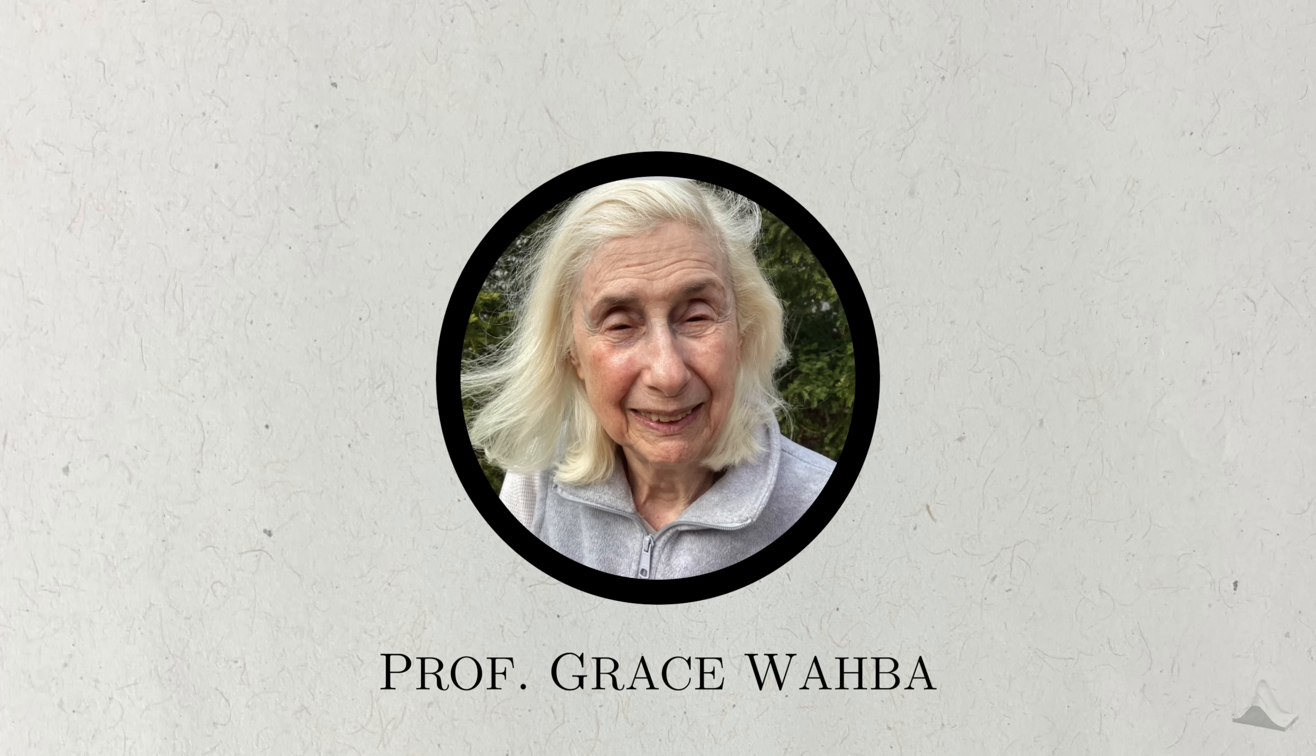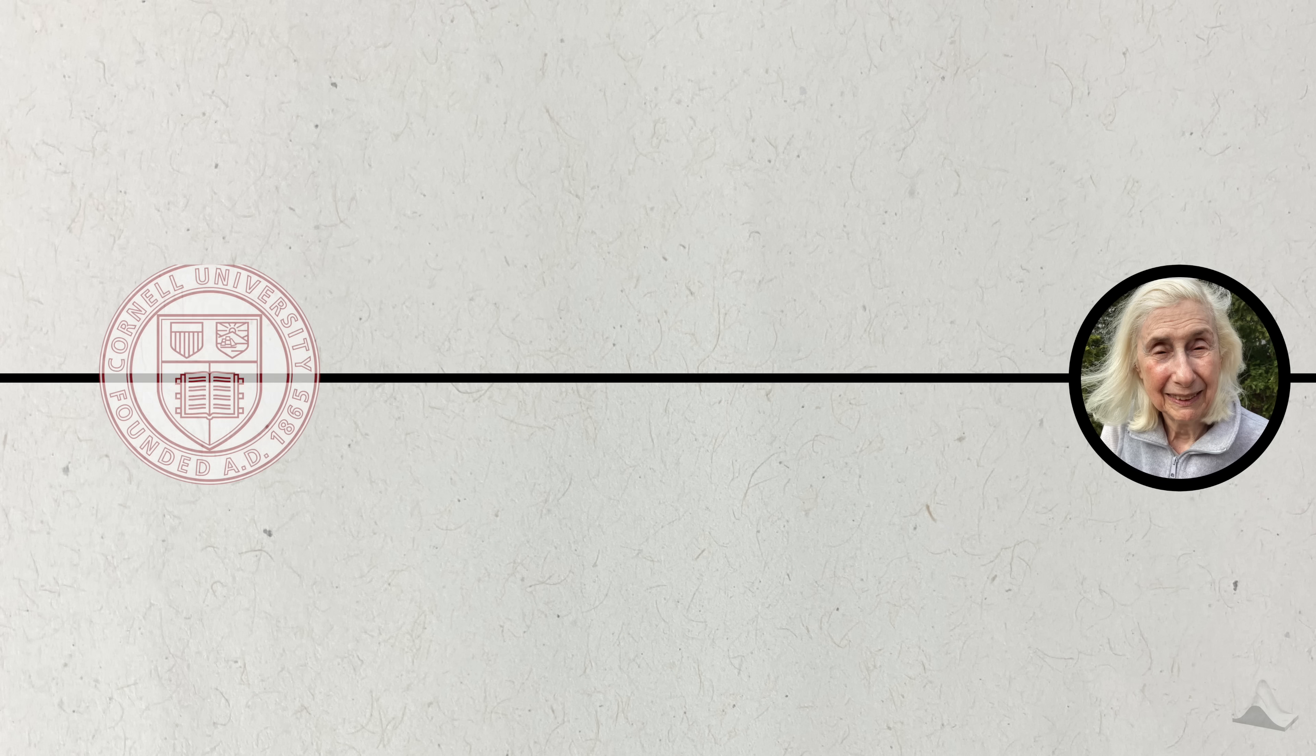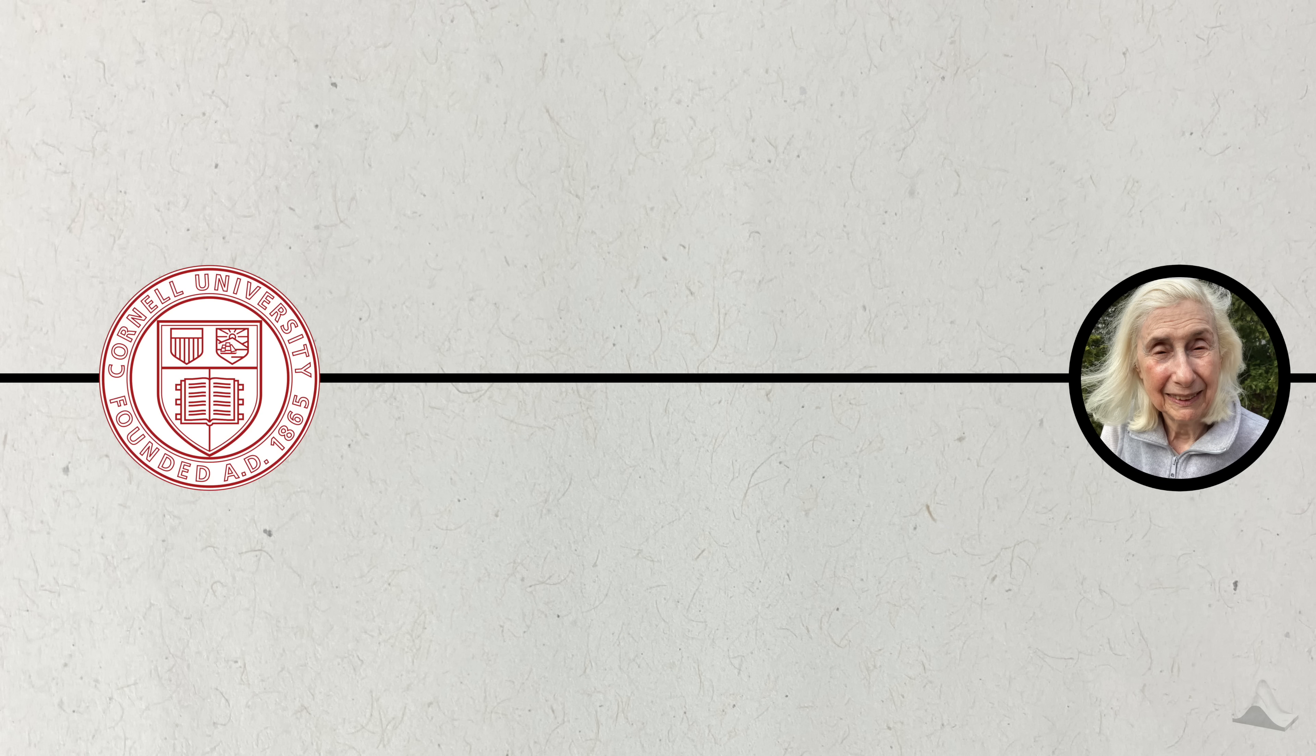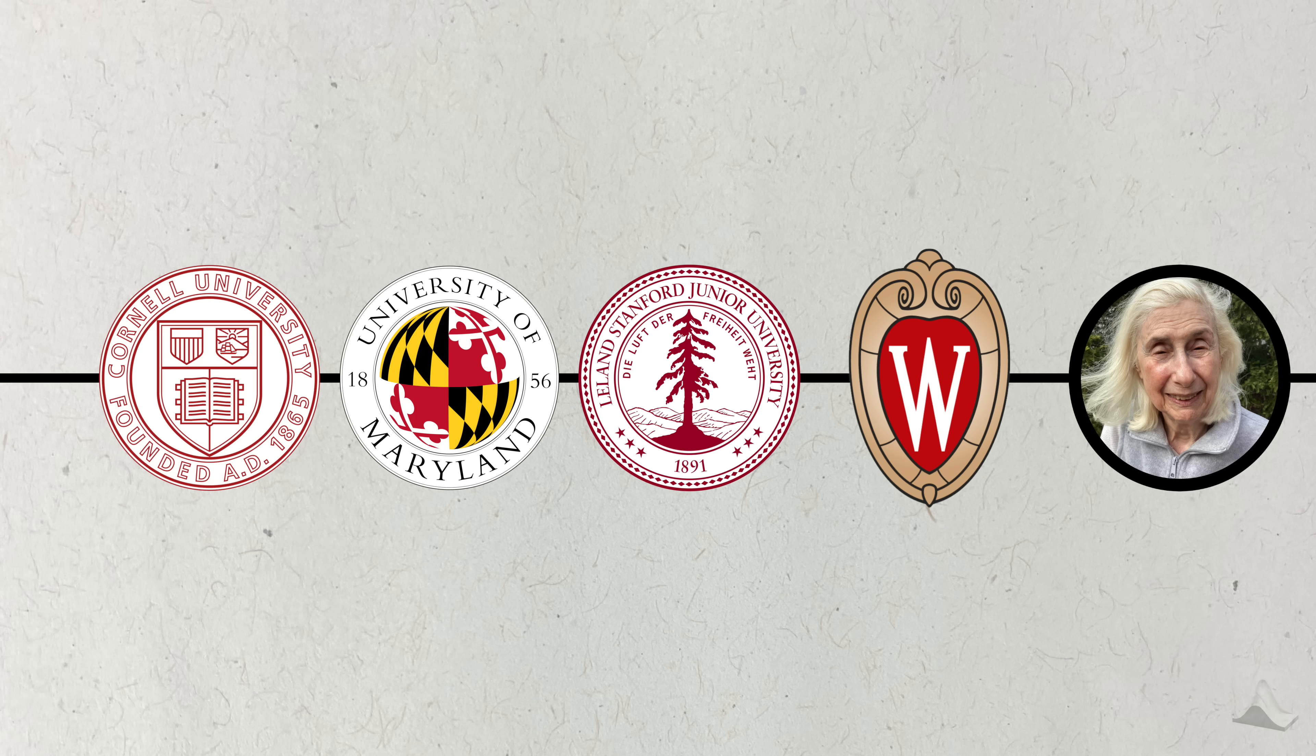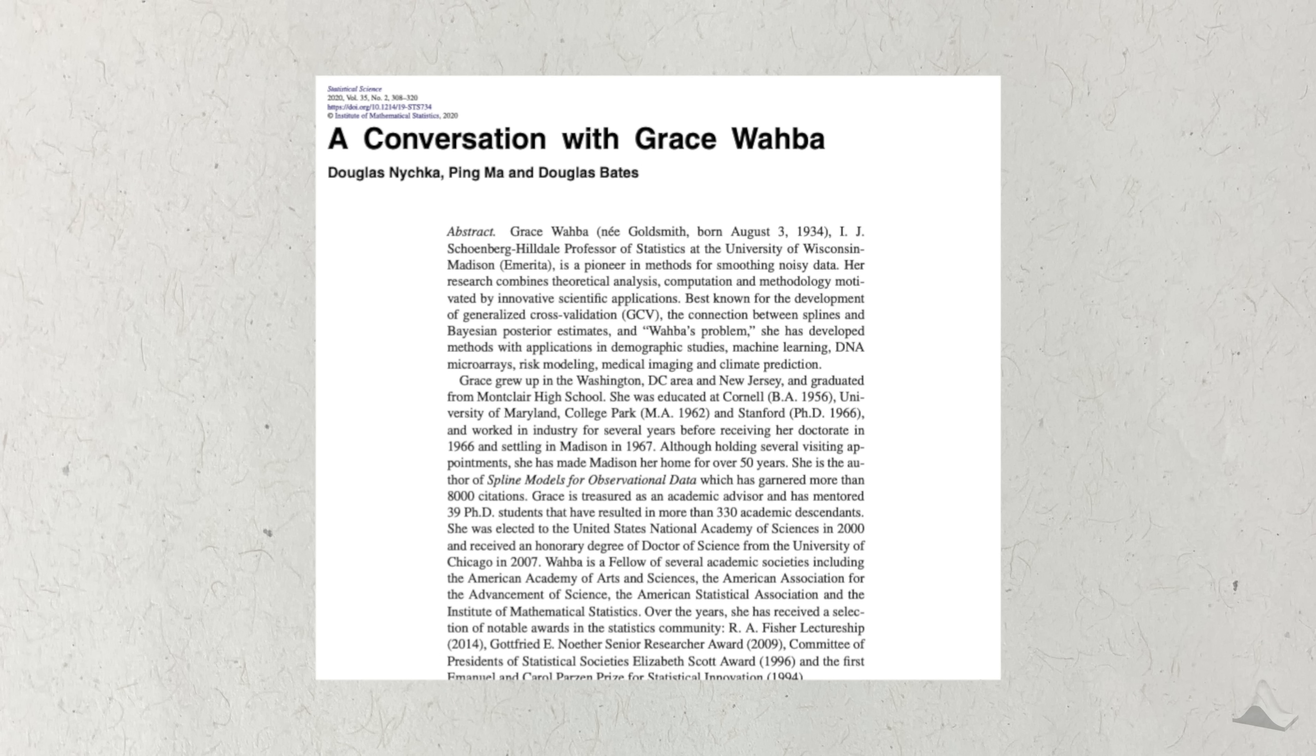The winner of the 2025 International Prize in Statistics is none other than Professor Grace Wahba. Professor Wahba majored in math at Cornell at a time where only two Ivy League schools admitted women. She got her masters at the University of Maryland and her PhD in statistics at Stanford University. She became the first female faculty member in the Department of Statistics at the University of Wisconsin-Madison.